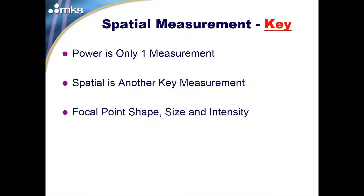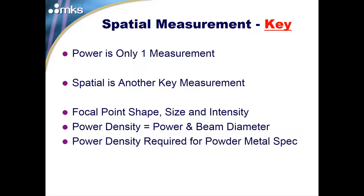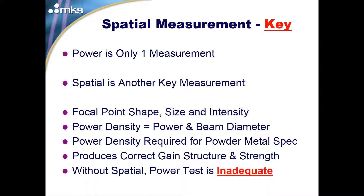We can understand what the focal point shape is, its size, and its intensity — this is the point of the beam that actually performs the work with the powder. Power density is the size of that beam at the focal point relative to power, and it's a key factor of the powder being used. If we don't have the right power density, the grain structure of that build will not be achieved. Power density produces the proper grain structure and strength of the device — power alone will not get us there.